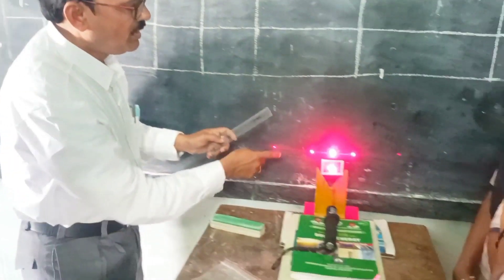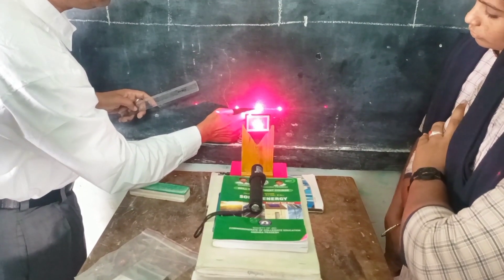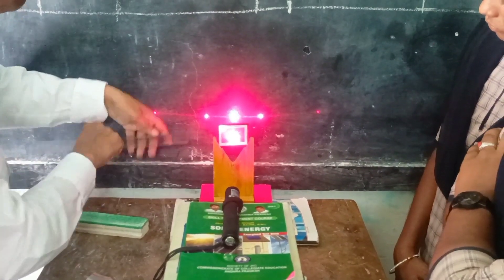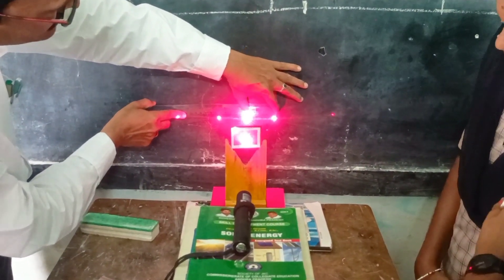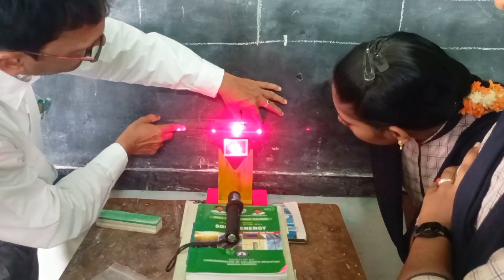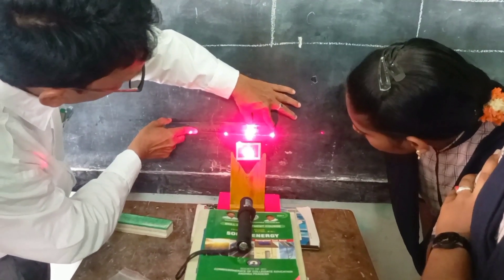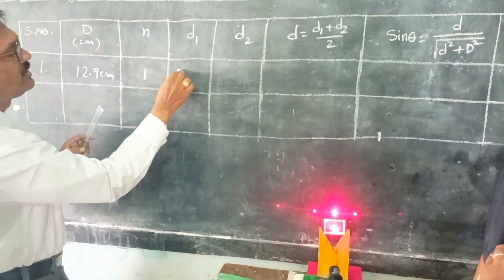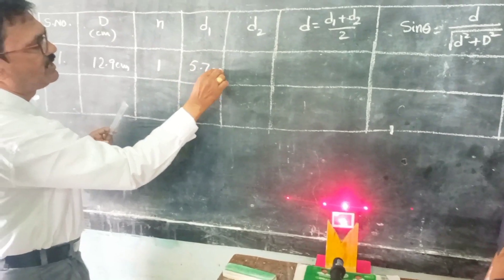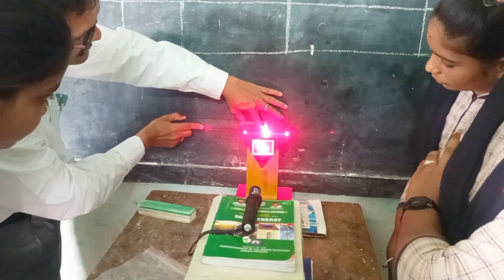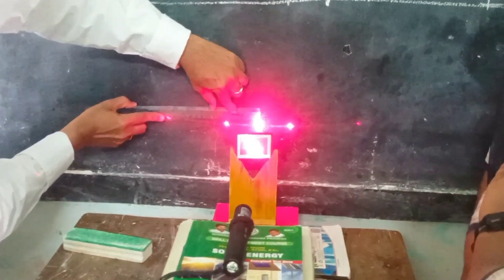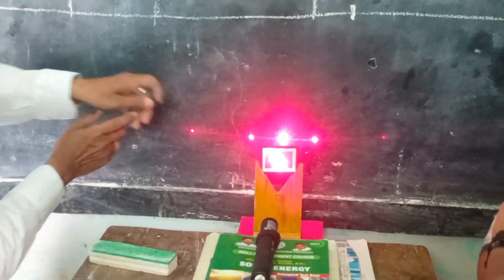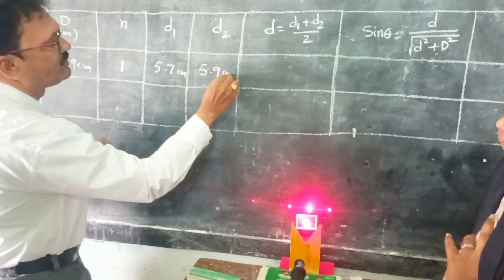From the central bright fringe to the first order on the right side, the distance is 5.7 cm. Similarly, on the left side, from the central bright fringe to the first order, the distance is 5.9 cm.